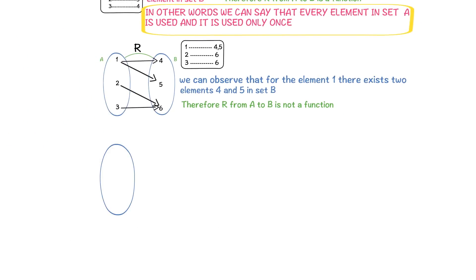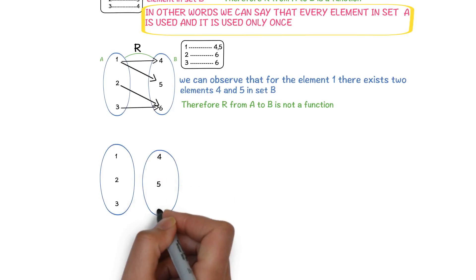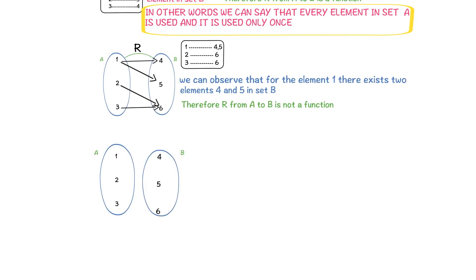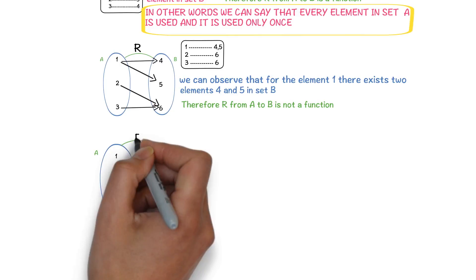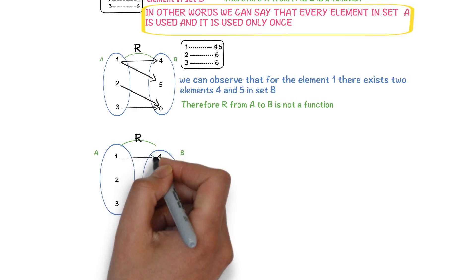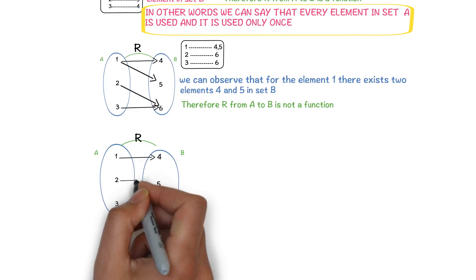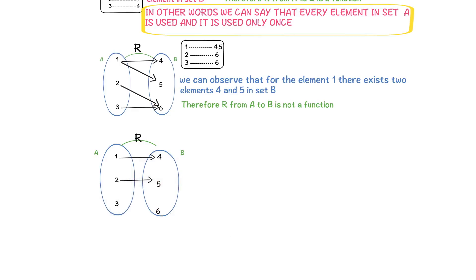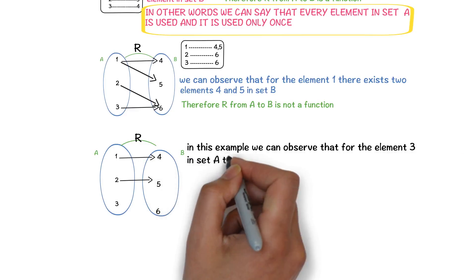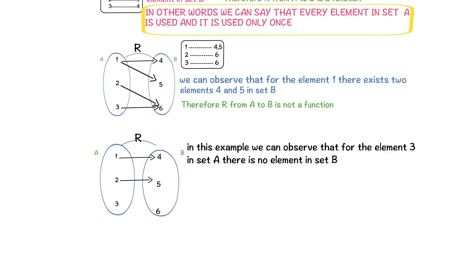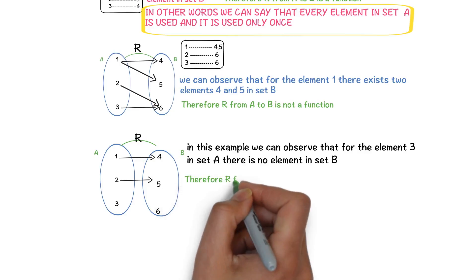Now I will try to explain the definition of function with one more example, so that you will get more clarity. R is a relation from A to B where 1 is related to 4 and 2 is related to 5. Observe that for the element 3, there is no element in set B. That means every element in set A is not used. Because of this reason, we can say that R is not a function from A to B.